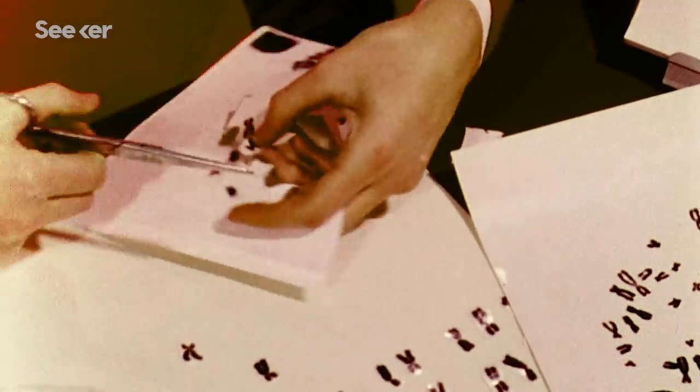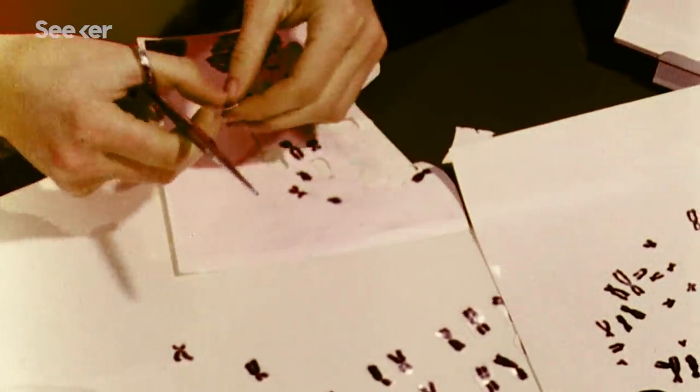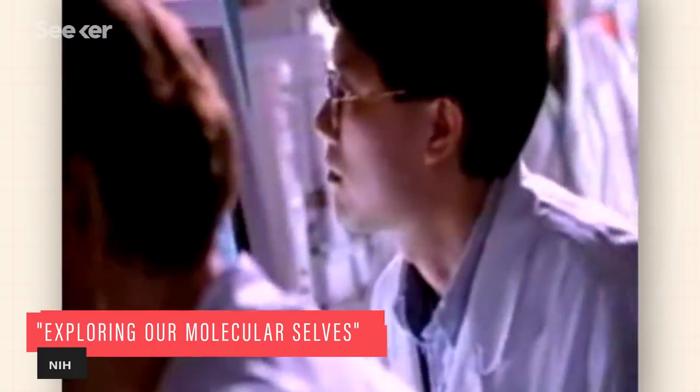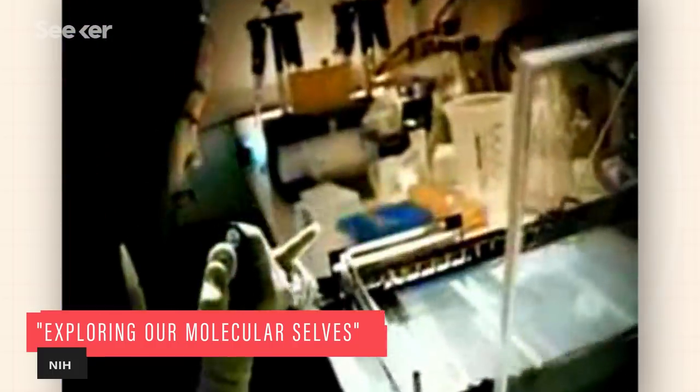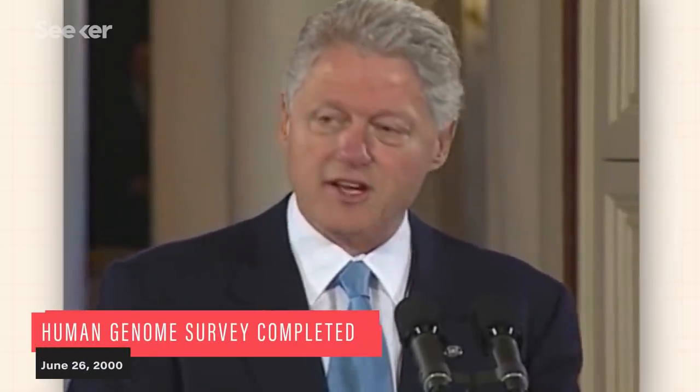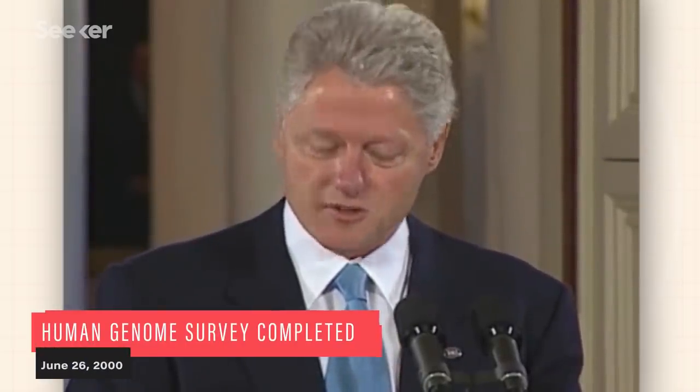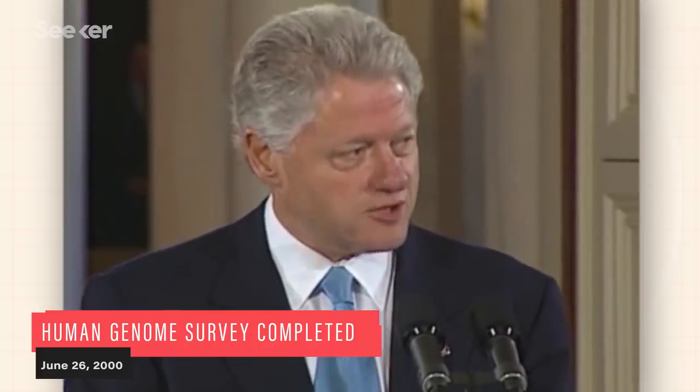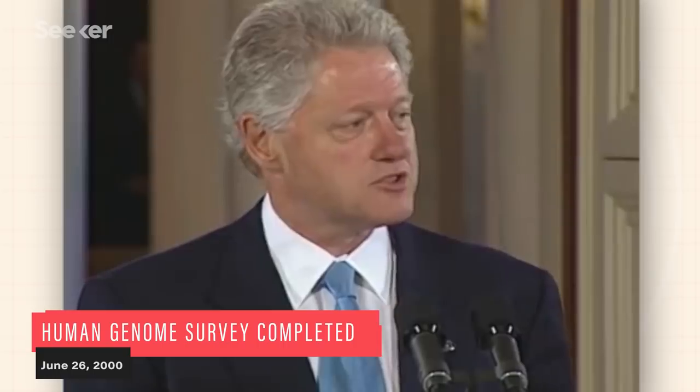Right now, we know a lot about the genetics side. It really first started in 1985 when people launched the Human Genome Project. In the future, doctors will likely be able to give each of us a genetic report card. We are here to celebrate the completion of the first survey of the entire human genome. Without a doubt, this is the most important, most wondrous map ever produced by humankind.